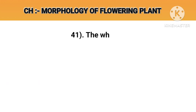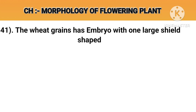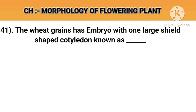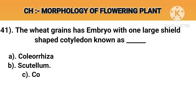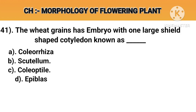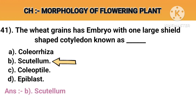Question number 41. The wheat grain has an embryo with one large shield-shaped cotyledon known as. Option A: Coleoptile. Option B: Scutellum. Option C: Coleorhiza. Option D: Epiblast. Answer B: Scutellum.